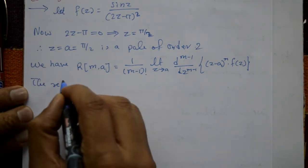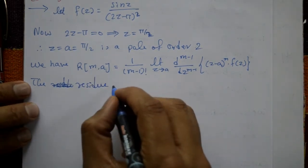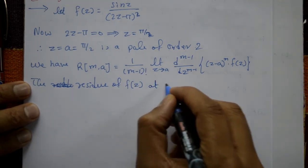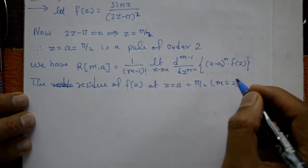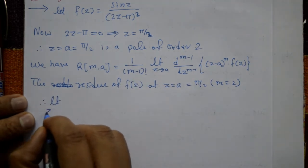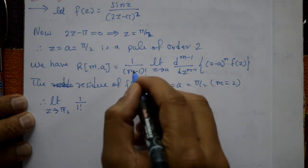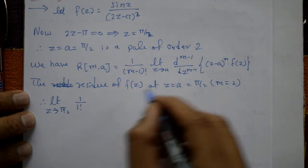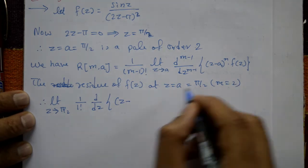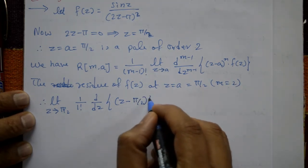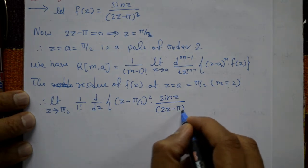Residue of f(z) at z = a = π/2, with m = 2: we take the limit as z tends to π/2 of 1/(1!) · d/dz of (z - π/2)² · sin z / (2z - π)². Writing (2z - π) = 2(z - π/2), so (2z - π)² = 4(z - π/2)², and the (z - π/2)² terms cancel.